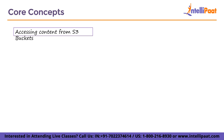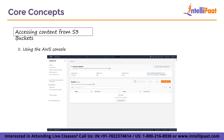Now let us move on to accessing content from S3 buckets. You have several ways to access your objects from S3 buckets — mainly three important ones. The first method is using the AWS console itself. By using the S3 console, you can access your bucket and perform almost all operations on a bucket without having to write any code. All you have to do is get familiar with the user interface of the AWS console.